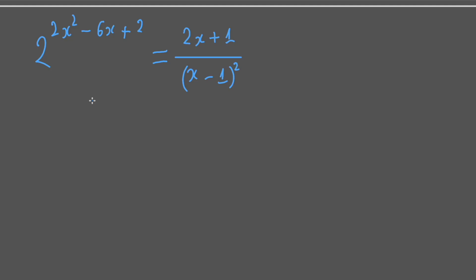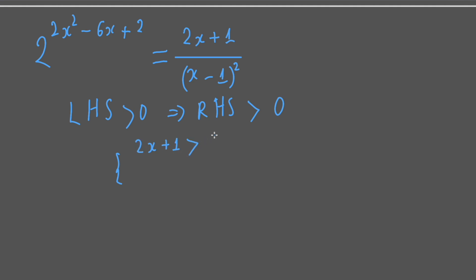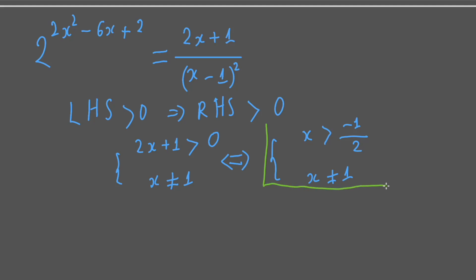First of all, we have to establish the domain of x — the condition of x. The left-hand side is always greater than 0, so the right-hand side must be greater than 0 as well. That means 2x + 1 must be greater than 0, and x must be different from 1 because x − 1 is in the denominator and cannot equal 0. So the condition is x > −1/2 and x ≠ 1.